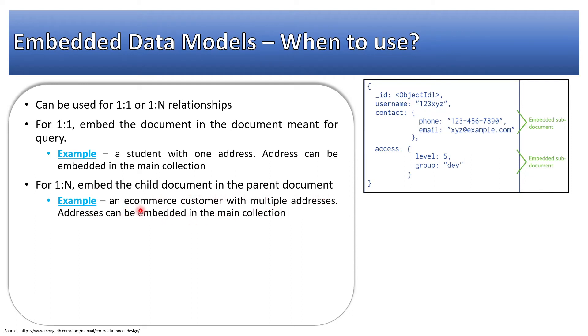For example, an e-commerce customer with multiple addresses. Addresses will be a part of main collection which is a customer collection. It should not be that we have address collection and there we are embedding customer, because customer is going to be queried most of the time. We will not query on addresses. We will query on the customer side.